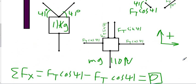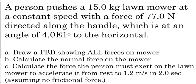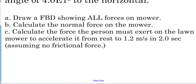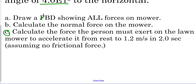This was to emphasize how we can break up x and y components from non-perpendicular vectors. Now, the next problem: a person pushes a 15-kilogram lawnmower at a constant speed with a force of 77 newtons directed along the handle, which is at an angle of 40 degrees to the horizontal. Draw a free-body diagram showing all the forces on the mower, calculate the normal force on the mower, and then calculate the force the person must exert to accelerate it from rest to 1.2 meters per second in 2 seconds, assuming no frictional force for part C. So the lawnmower is 15 kilograms, constant speed, force of 77 newtons directed along the handle at an angle of 40 degrees to the horizontal. Let's start drawing our free-body diagram.